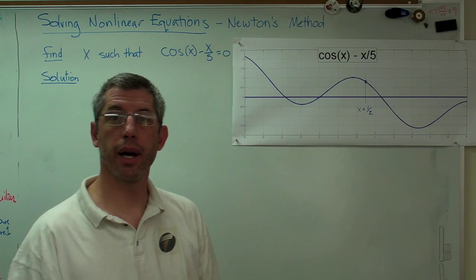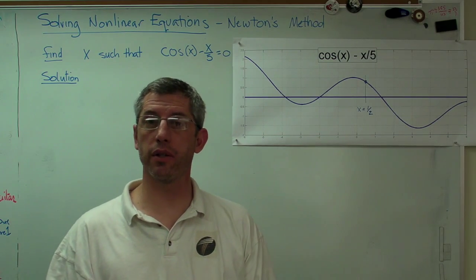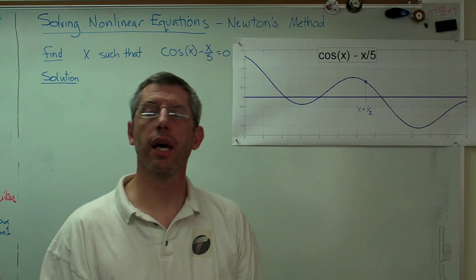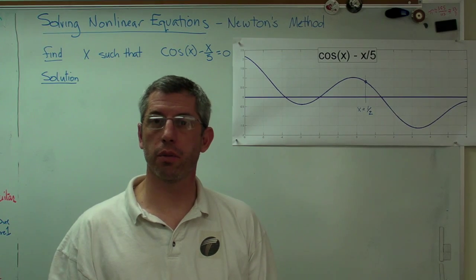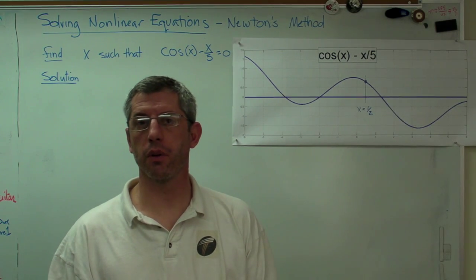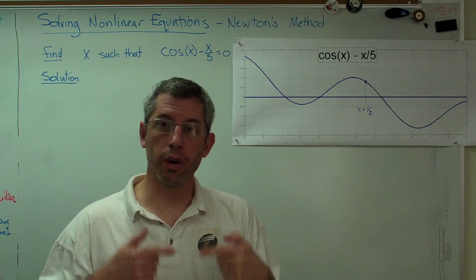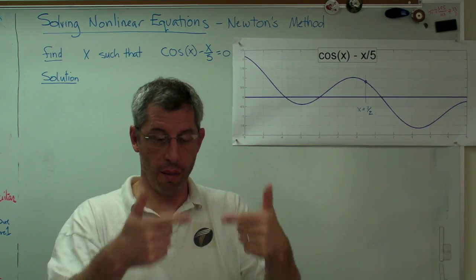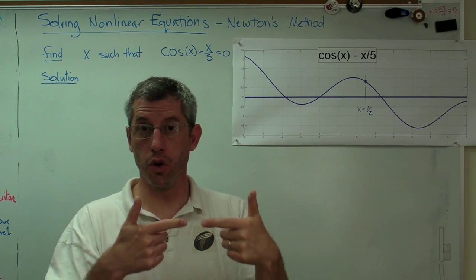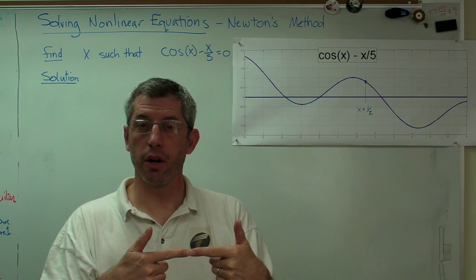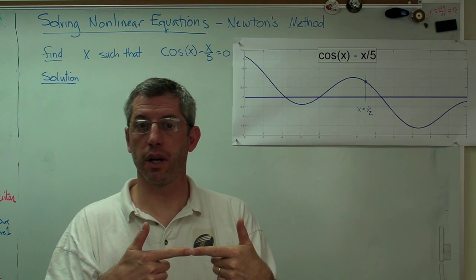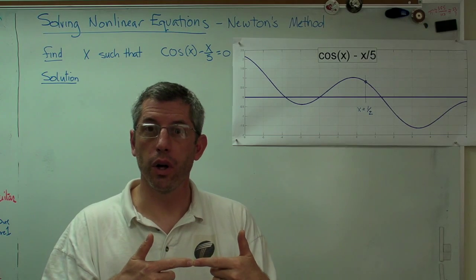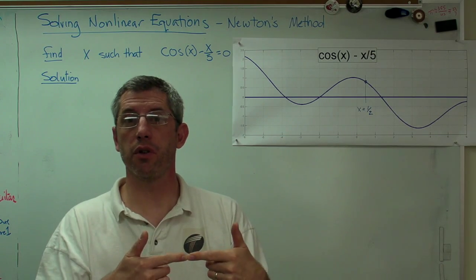You have to iterate and by iterate we mean we start with an estimate, an initial guess really, of the answer to the expression or the root of the equation and we go through an iterative process where we update our guess to make a new estimate of the answer, evaluate it, and if it's not accurate enough we'll go through the same iterative procedure again.